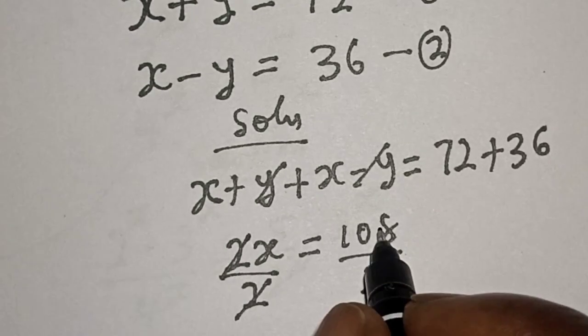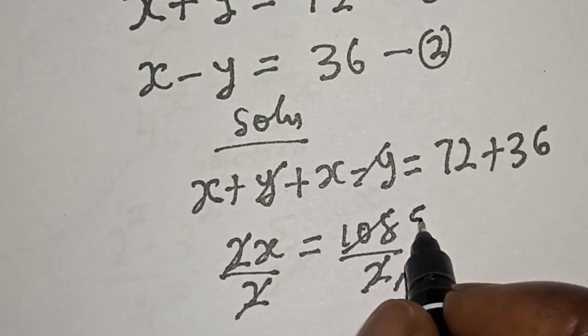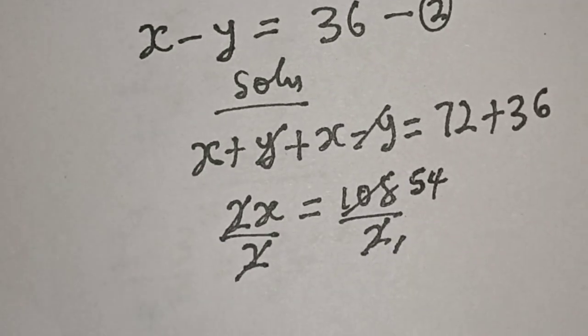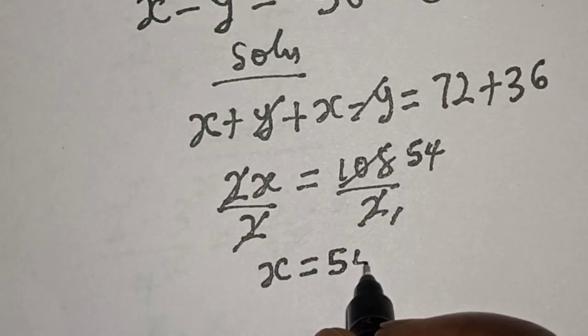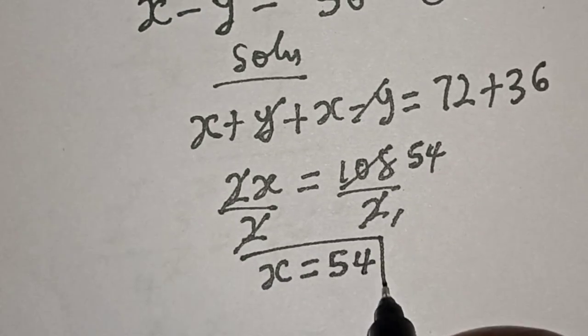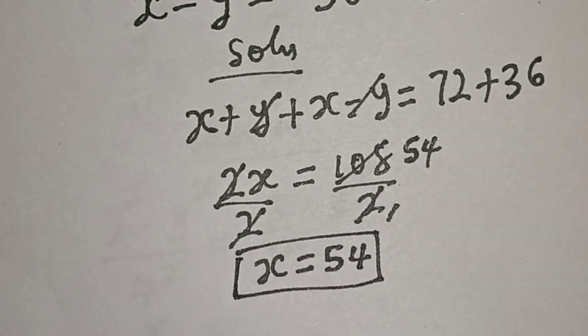This will cancel the 2 here. x equals 54. This is the value of x. Let's